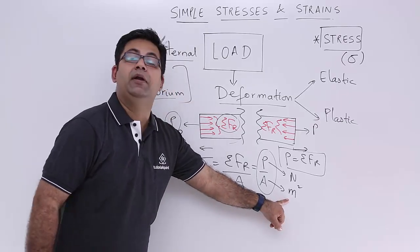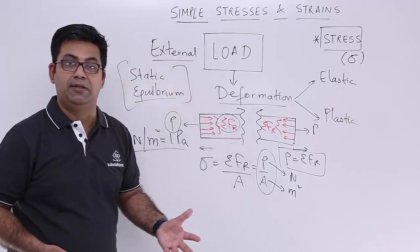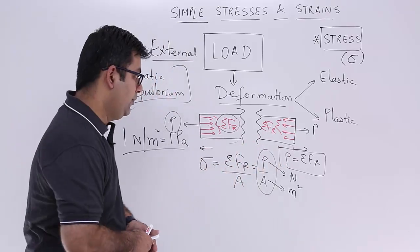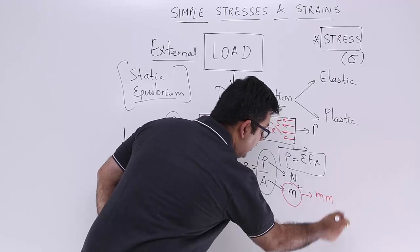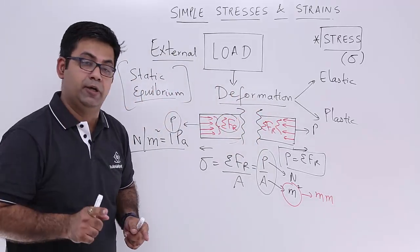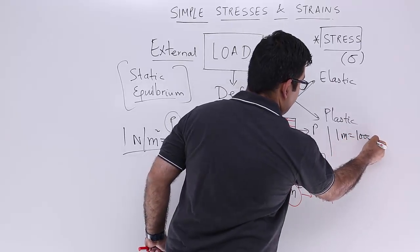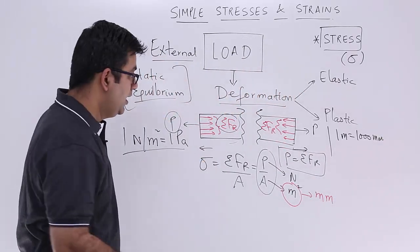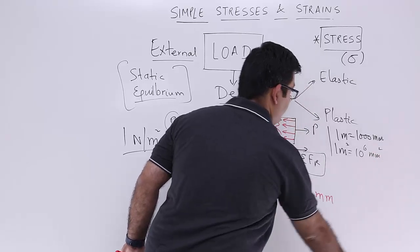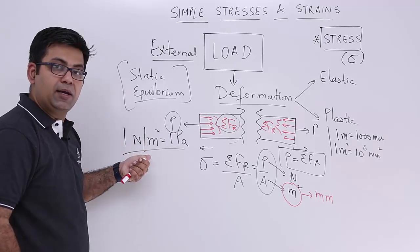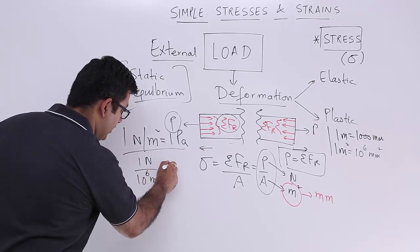We don't typically deal in meters in engineering applications — very seldom do you have mechanical engineering components measured in meters, unless you are a civil engineer dealing with beams of meter spans. In mechanical engineering, lengths are more commonly in millimeters. So we need a conversion: one meter equals 1000 mm, or 10³ mm. Therefore, one meter squared equals 10⁶ mm², and substituting gives us: 1 N / 10⁶ mm² = 1 Pascal.